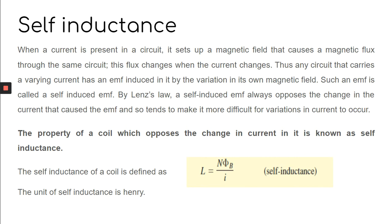Now suppose the current changes with time. Initially there is a current I, which creates some magnetic field and magnetic flux. When you increase the current, there is an increase in the magnetic field and magnetic flux. So whenever there is a varying current there is a varying magnetic flux, and whenever there is a varying magnetic flux an EMF is induced — this is known as self-induced EMF.